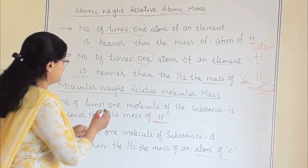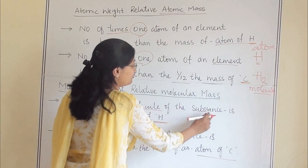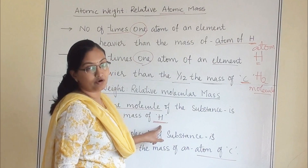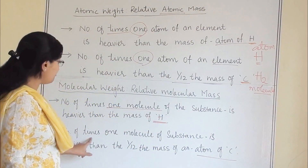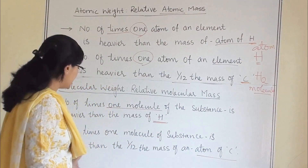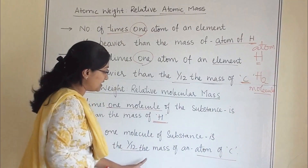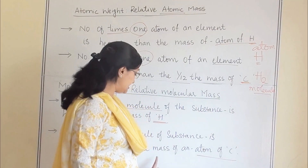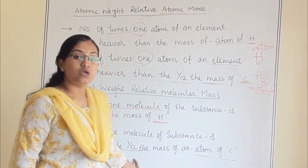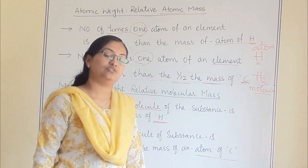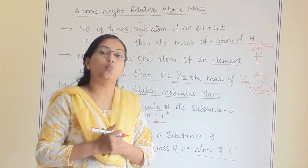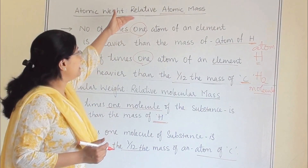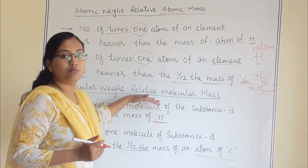The number of times one molecule of a substance is heavier than the mass of one atom of hydrogen, or the number of times one molecule of a substance is heavier than one-twelfth the mass of an atom of carbon — that is one-twelfth because one carbon atom's mass is 12. So this is the comparison for relative atomic mass and relative molecular mass.